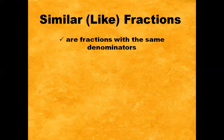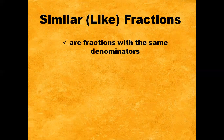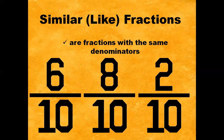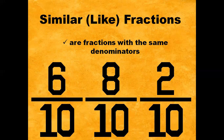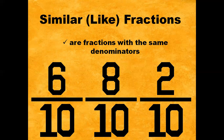On the other hand, similar or like fractions are fractions with the same denominators. For example, we have six-tenths, eight-tenths, and two-tenths. These fractions have the same denominator, and that is ten.